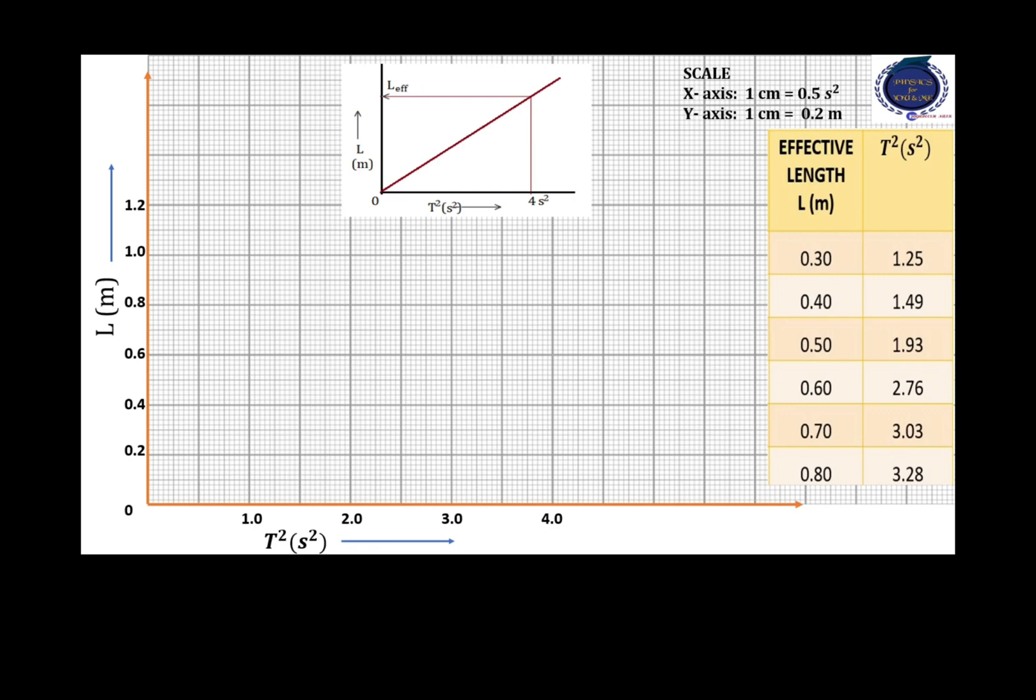Now, let us mark all the points. They are not lying in the straight line. Now, the question is, how to draw the straight line in this graph? We can see that in the nature of graph,